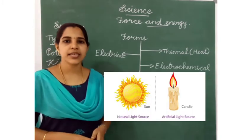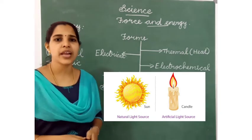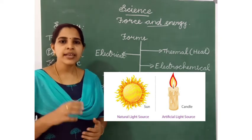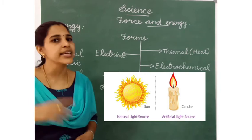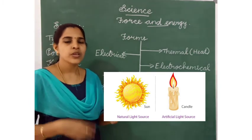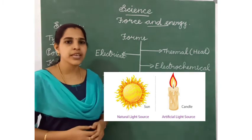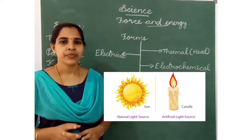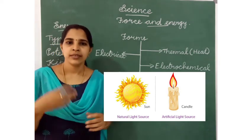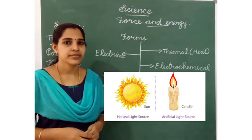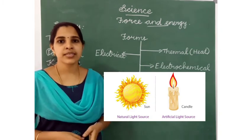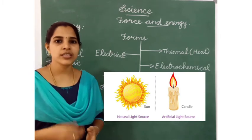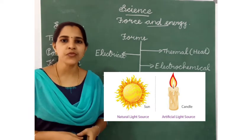Next is light energy. What is the main source of light? The main source of light is the sun; the sun is also the main source of heat. What is the use of light energy? We use light energy in bulbs, mobiles, LED bulbs, televisions, smart boards, and torches. These are different sources of light.